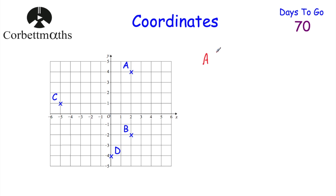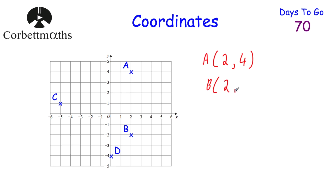So in terms of point A, if we have a look at A, it's two along the corridor, four up the stairs. So it's two along, four up — the coordinate two, four. For point B, we go two along and then two down, so it'll be two, negative two.